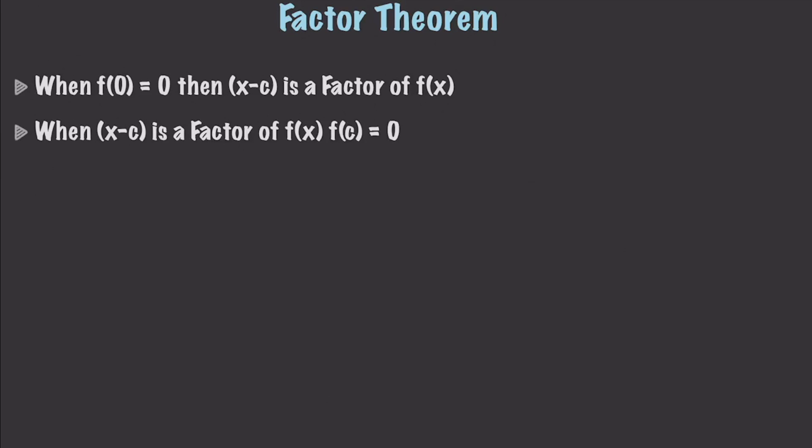That brings us to the factor theorem. It says that whenever f(c) equals 0 for some constant c, then x minus c is going to be a factor of the function f(x). Conversely, when x minus c is a factor of f(x), then f(c) equals 0. Anytime x minus c is a factor, plugging that same constant into the function gives a value of 0.